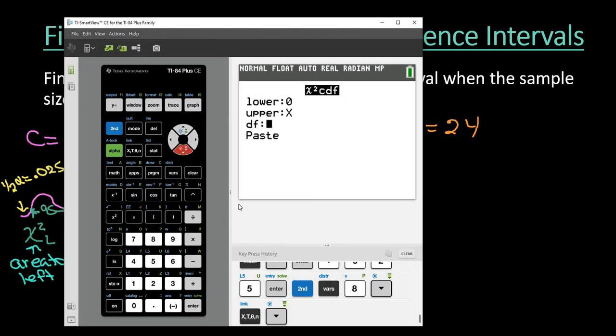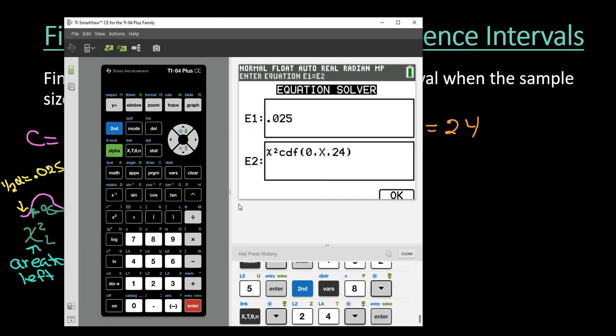So 24 is what I would put in for my degrees of freedom. And then I would just hit paste. And it's going to ask me okay down here. So you can either hit second and enter or you can just hit the graph button because the graph button is directly underneath that.